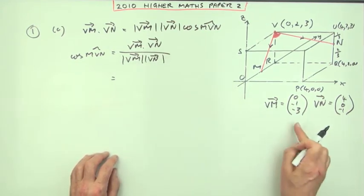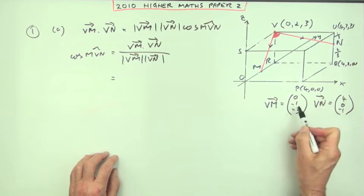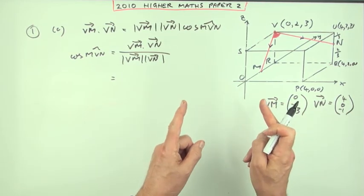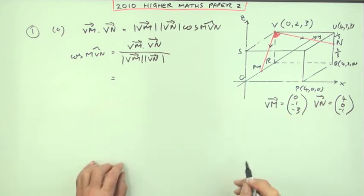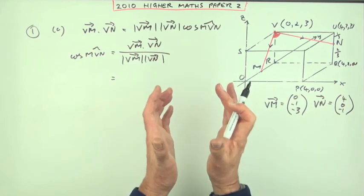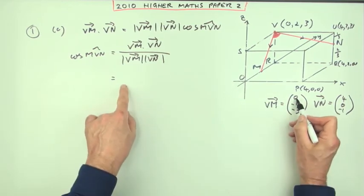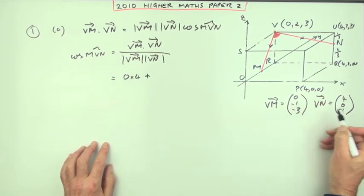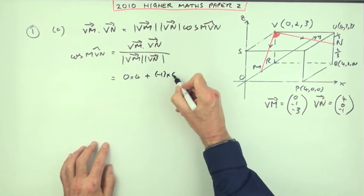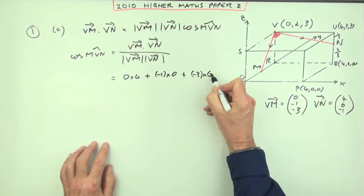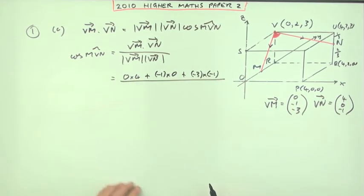So VM dot VN means multiplying the corresponding components and adding them together to get a single number. It's the scalar product. A scalar is a single number. You don't multiply them together and leave them as a vector. So that would be the X components, so that's nothing times four. The Y components, negative one times zero. The Z components, negative three times negative one. All to be divided by, now what are the magnitudes?